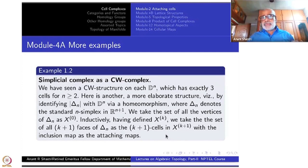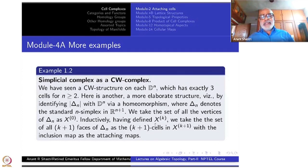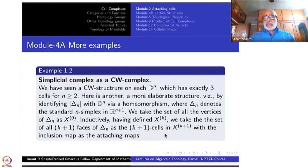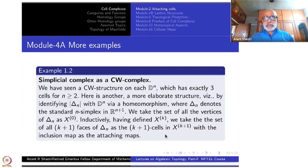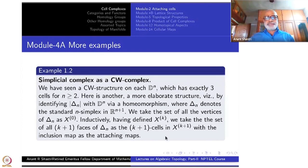The endpoints of these vectors will be taken as the vertices. Inductively, having defined X^k, we take the set of all (k+1)-faces of Delta_n as (k+1)-cells in X^{k+1}, with the inclusion map as attaching maps. The point is we are not building up the space here; the space is already there and we are decomposing it into a CW complex — decomposing it into open cells.